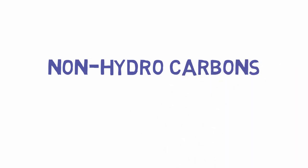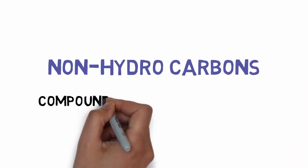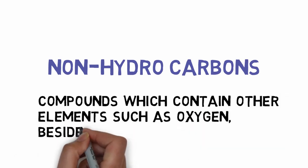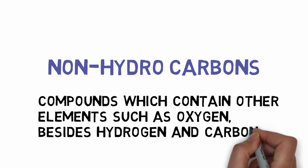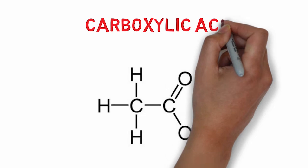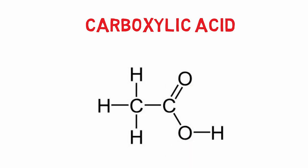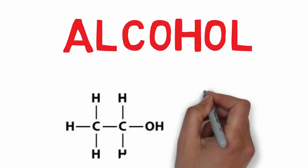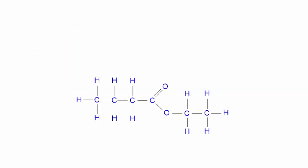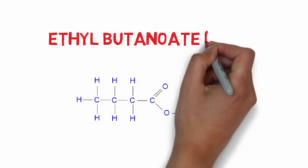Non-hydrocarbons are compounds which contain other elements such as oxygen, besides hydrogen and carbon. For example, carboxylic acid has a structure where one oxygen is present along with carbon and hydrogen atoms. Similarly, alcohols also have an oxygen atom. Another example is an ester, such as ethyl butanoate. These are examples of non-hydrocarbons.